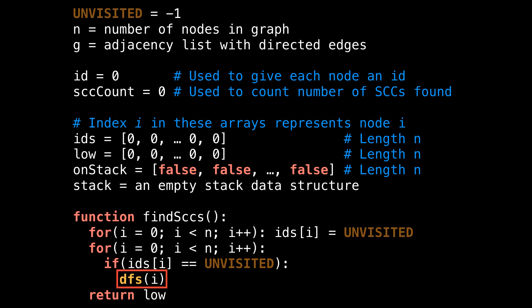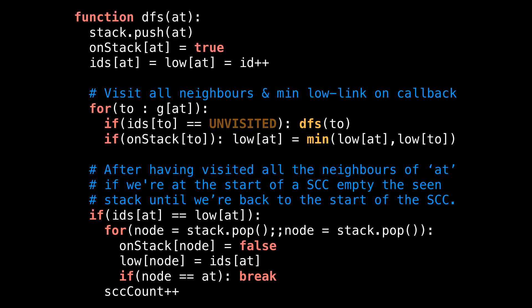Now let's look at what's happening inside the depth first search method, which is really where all the magic happens. The input argument to the depth first search method is a variable called at, which I use to denote the ID of the node we are currently at. On the first three lines, I do some housekeeping: add the current node to the stack, mark the current node as being on the stack, and give an ID and a low link value to the current node.